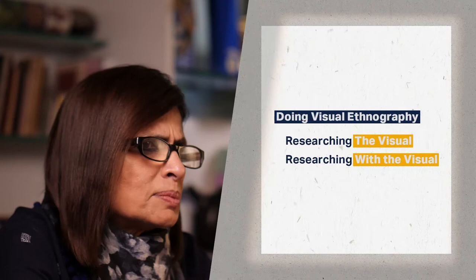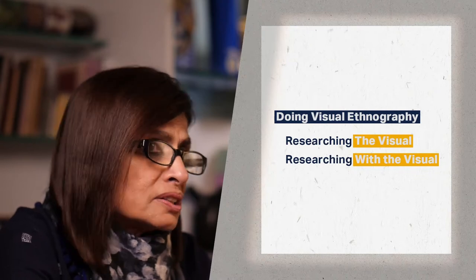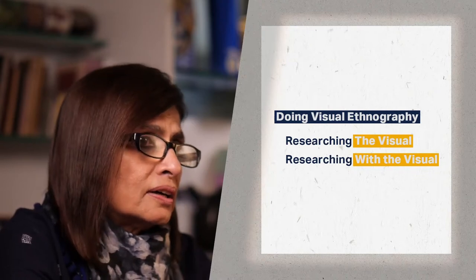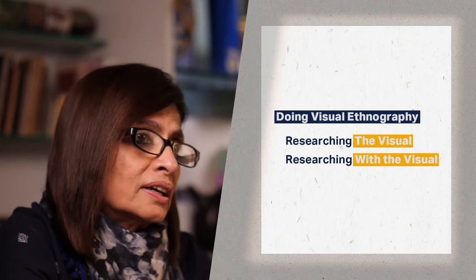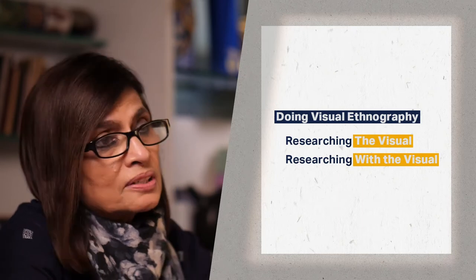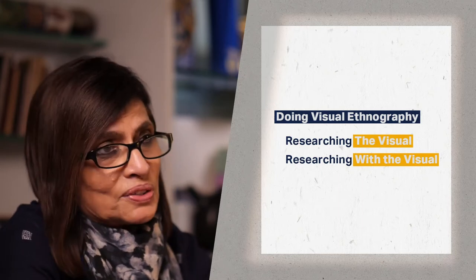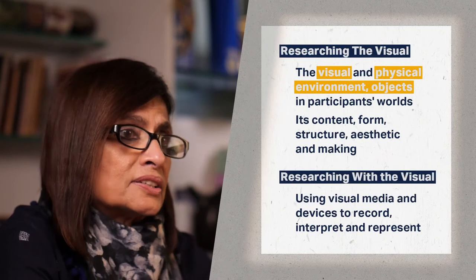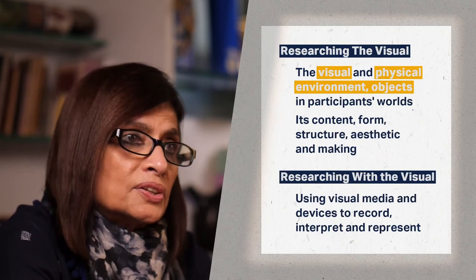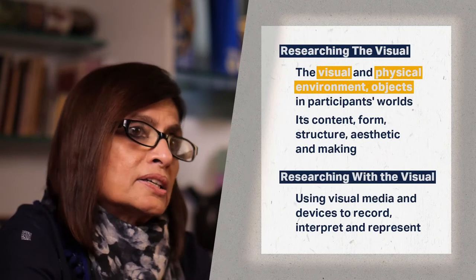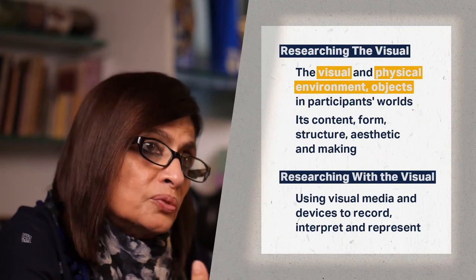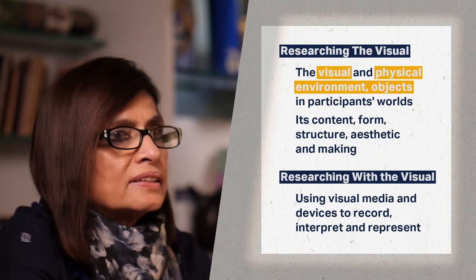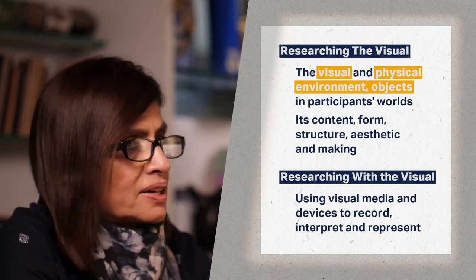Let's begin with asking ourselves, what does it mean to do visual ethnography? Broadly speaking, we may do this in two different ways. The first of these is researching the visual — it is where we study the visual and physical objects that exist in the worlds of our participants.